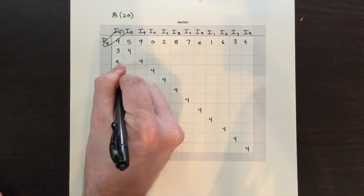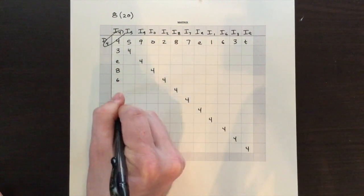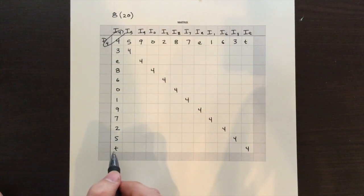8 minus 0 is 8, obviously. And then we can keep on going. 8 minus 2 is 6. And there we have our I4 column.